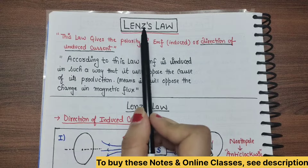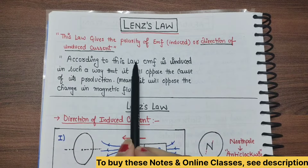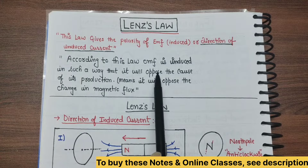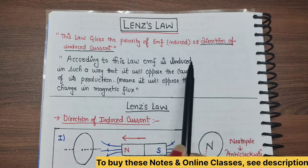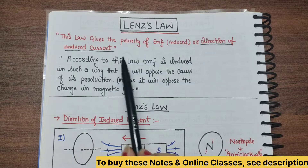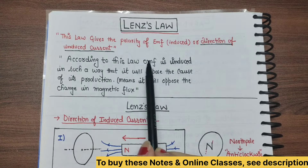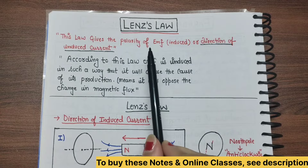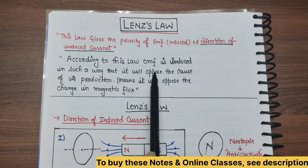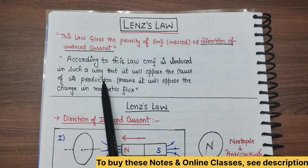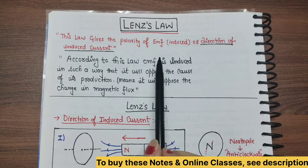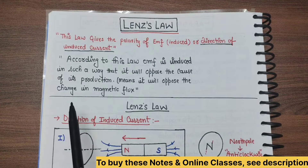So how does Lenz's Law give the direction? According to this law, EMF is induced in such a way that it will oppose the cause of its production. That means the direction of the induced current or induced EMF will be such that it will oppose its own cause of production.